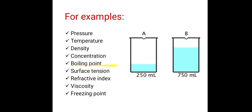Consider the boiling point. For this 250 ml water, we know that 100 degree Celsius is the boiling point of water. Now if we add 500 ml more water into that beaker, the boiling point of water remains the same — it is 100 degree Celsius. It does not become 100 plus 100, that is 200 degree Celsius. So there is no addition. These all are intensive properties.